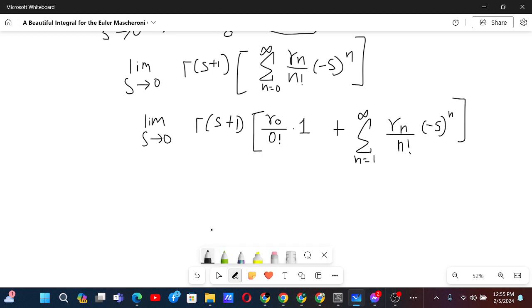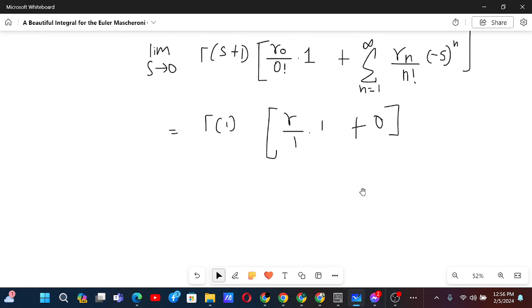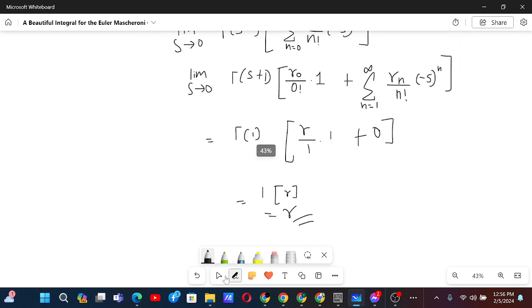Gamma of 1. Now this is just Euler-Mascheroni constant by 0 factorial is 1 times 1, plus now this is just 0 because s is going to 0 and n is a natural number. So we have our answer. This is just 1 times Euler-Mascheroni constant and we get that beautiful answer which is Euler-Mascheroni constant.